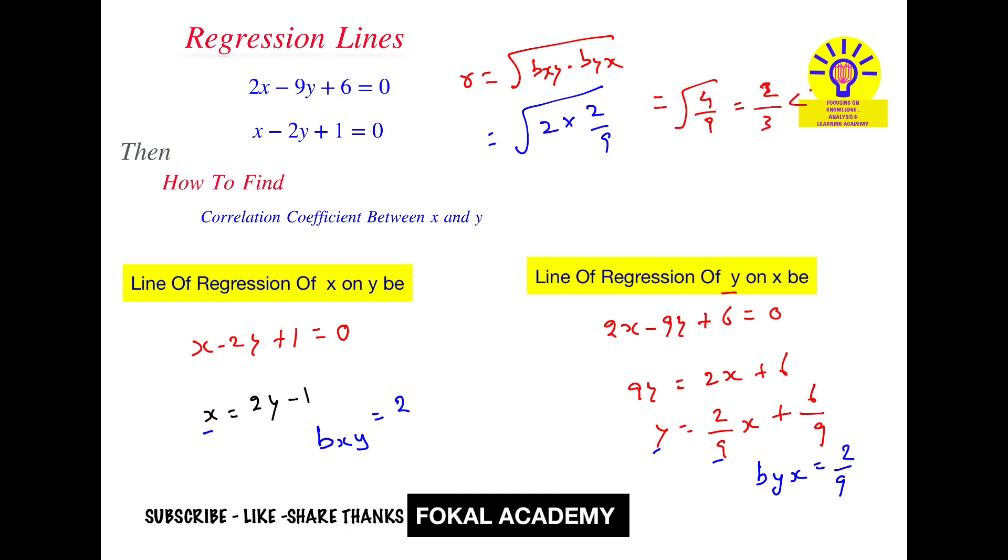So it is less than 1. So this is the correlation coefficient for the given problem, that is 2 by 3. This is the required value for the given problem. This is the correlation coefficient. So whenever regression lines are given, this is the process of calculation.